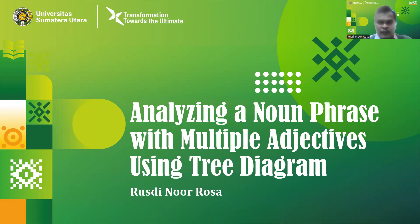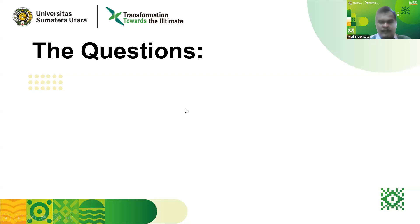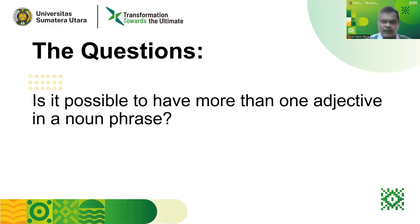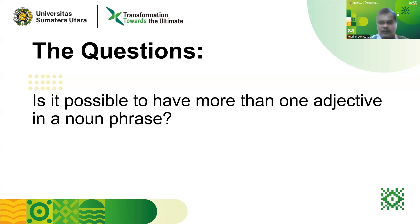First of all, we need to answer two questions related to this topic. The first question is: is it possible to have more than one adjective in a noun phrase? And the answer is yes. This question has already been asked by some of my viewers related to the possibility of using more than one adjective in one NP. I can tell you clearly that it is always possible to have more than one adjective in a noun phrase.